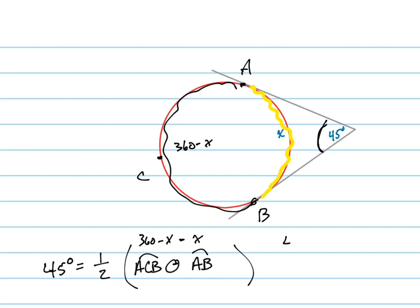I'm going to multiply two through to get rid of that fraction - it's called clearing the fraction - so 90 equals 360 minus 2x. Now let's subtract 360 from both sides, so that would be negative 270 equals negative 2x.